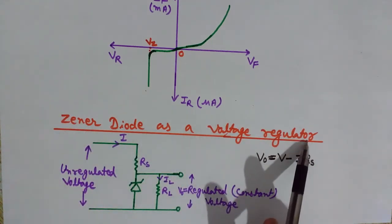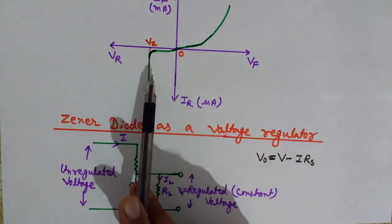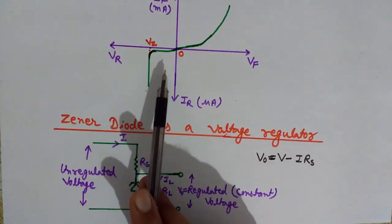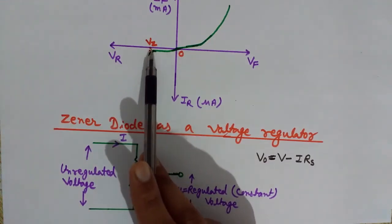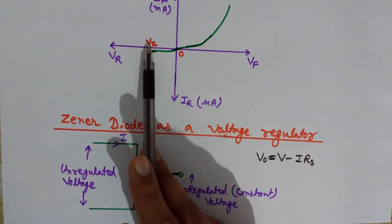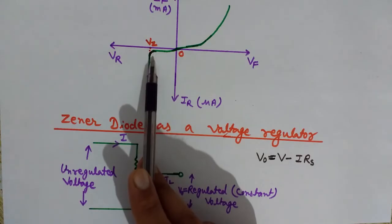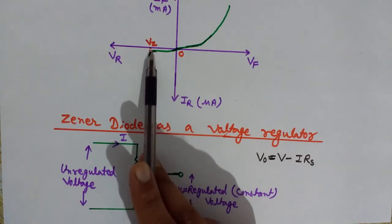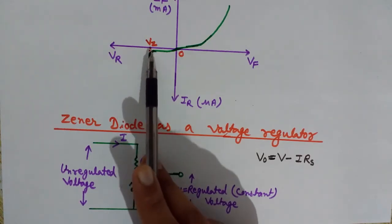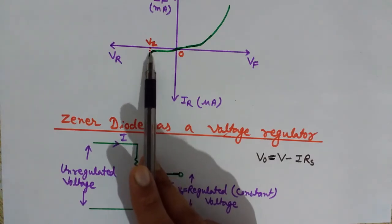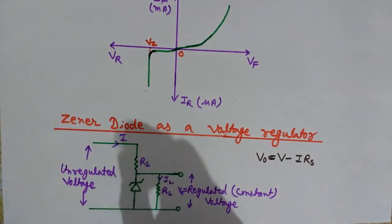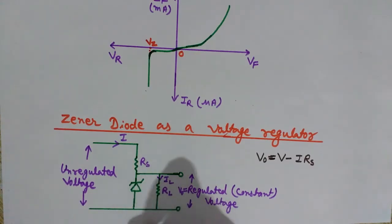Now we will see how we can use the zener diode as a voltage regulator in a circuit. At the zener breakdown voltage Vz, it breaks down and does not let the voltage increase after this, even if the current is increasing.